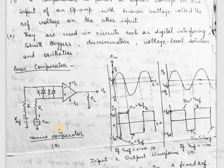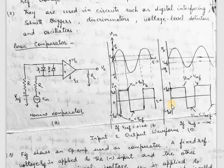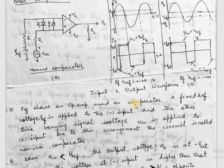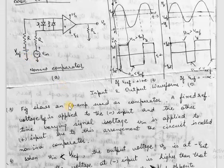In the diagram, the input waveform and the output waveform are shown. We will discuss how these waveforms are formed. An operational amplifier is used as a comparator — a fixed reference voltage is applied to the inverting input and a time-varying signal voltage is applied to the non-inverting input. This arrangement is why the circuit is called a non-inverting comparator. If the input voltage were applied at the inverting end, it would be called an inverting comparator.